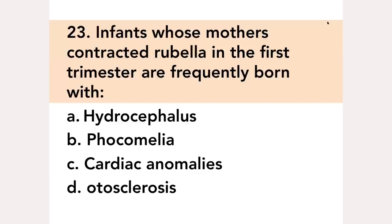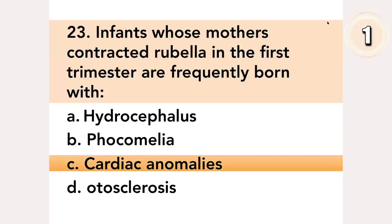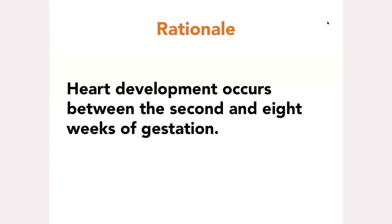Infants whose mothers contracted rubella in the first trimester are frequently born with: A. Hydrocephalus, B. Focumelia, C. Cardiac anomalies, D. Otosclerosis. Answer: C. Cardiac anomalies. Heart development occurs between the second and eighth weeks of gestation.